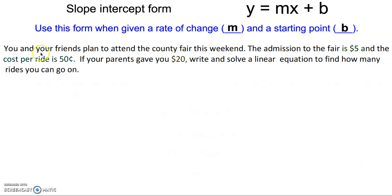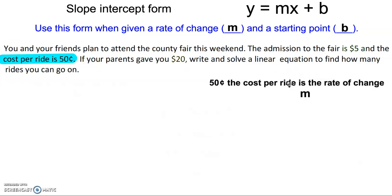A rate of change is going to be the cost per ride, which is 50 cents. So the cost per ride is the rate of change, the m value. Going to the fair, as soon as you get there, before you actually get in, you have to pay the admission fee. So that's like the starting cost of how much it costs to go to the fair.